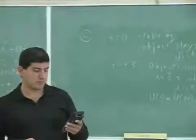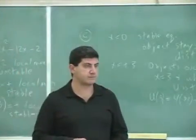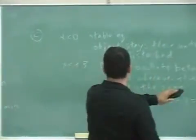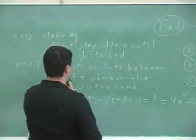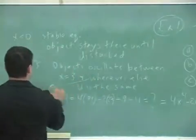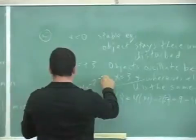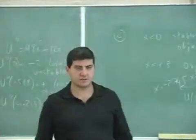2.7, negative 2.745. Okay, so objects will oscillate between x equals 3 and x equals negative 2.745. That's the answer.